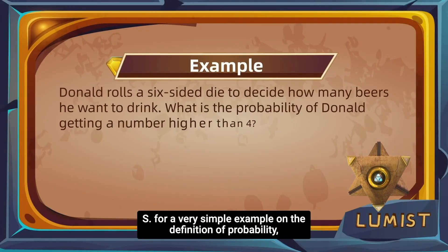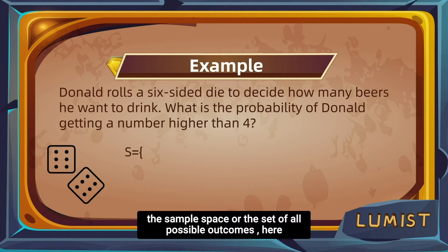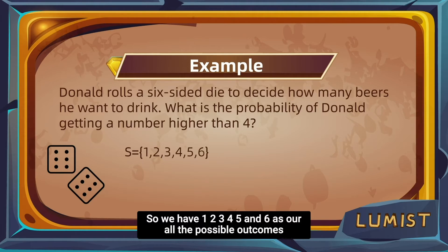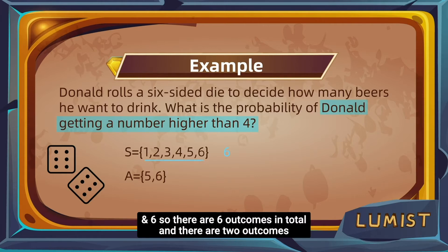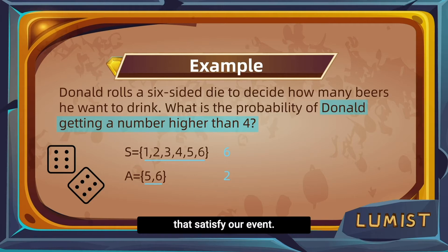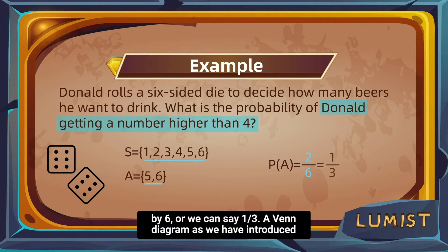For a simple example on the definition of probability, we're rolling a six-sided die. So the sample space is {1, 2, 3, 4, 5, 6} as all the possible outcomes. Our event A represents a subset of these outcomes — specifically, the event that Donald gets a number higher than 4, so event A is {5, 6}. There are six outcomes in total and two outcomes that satisfy our event, so the probability of A is 2/6, or 1/3.